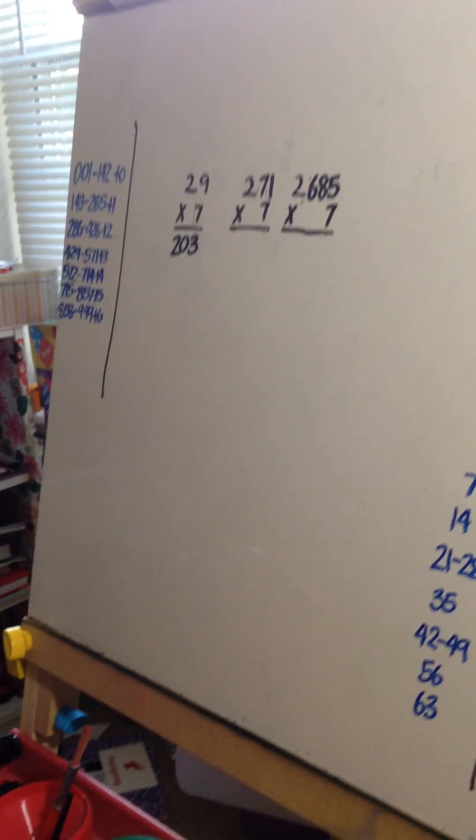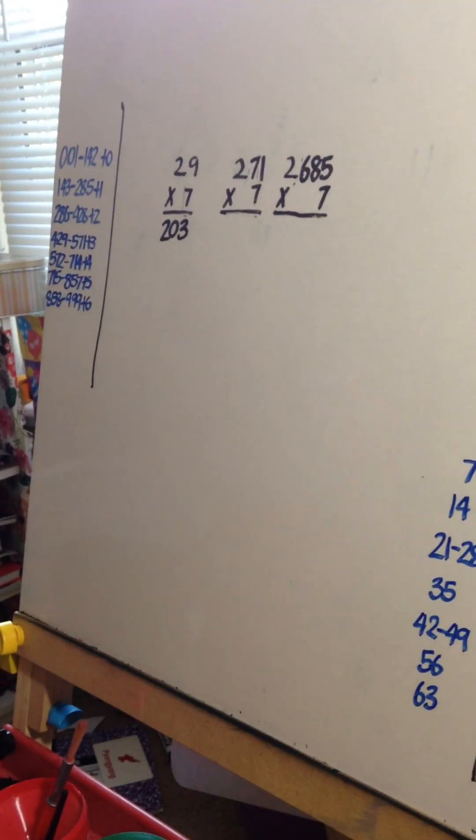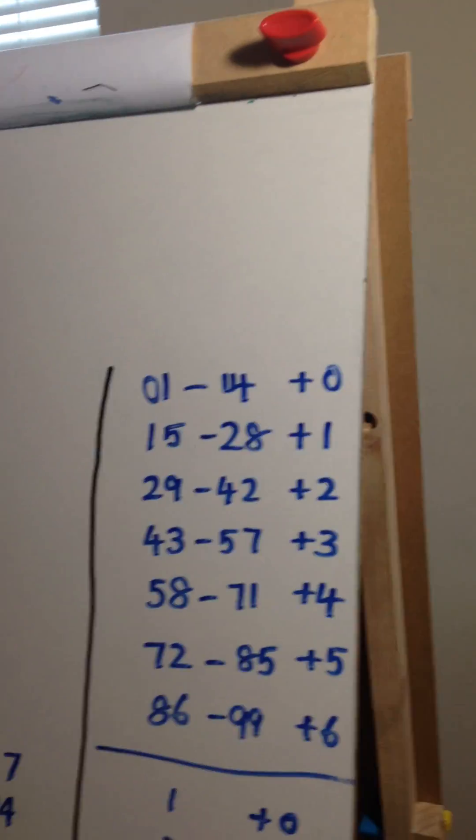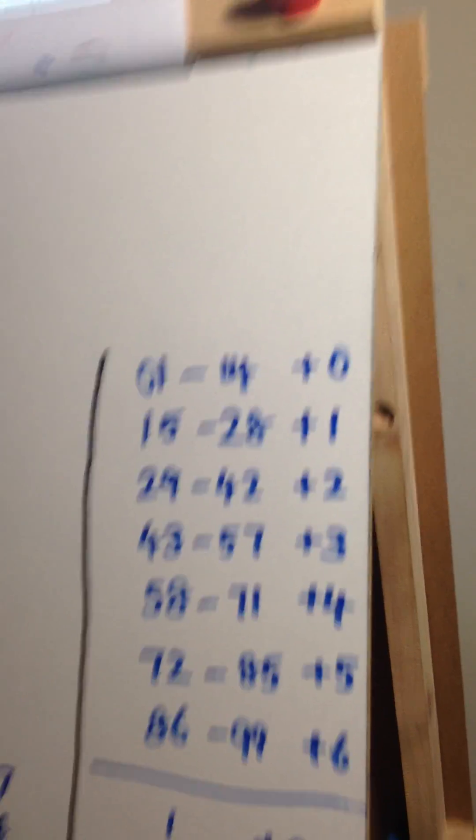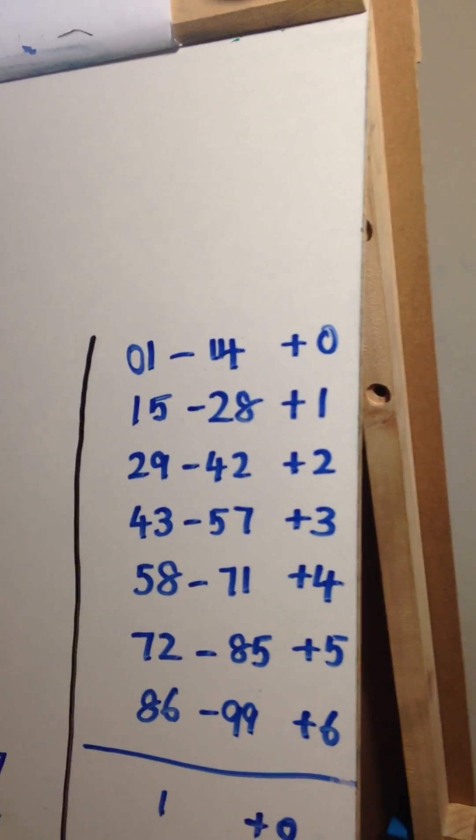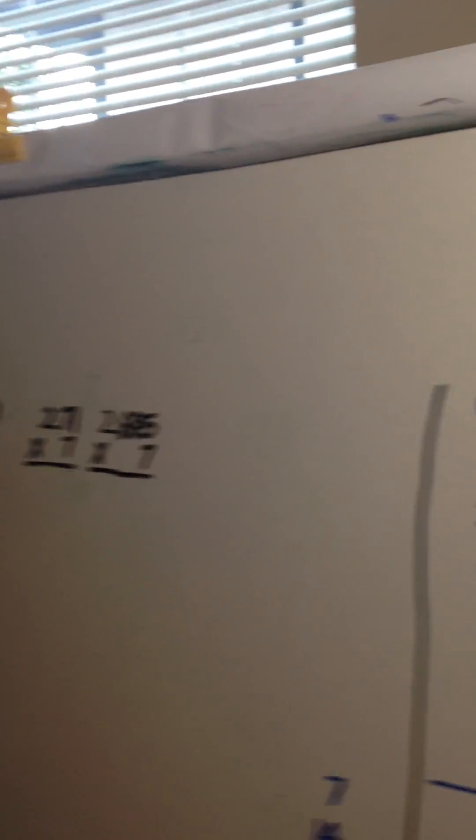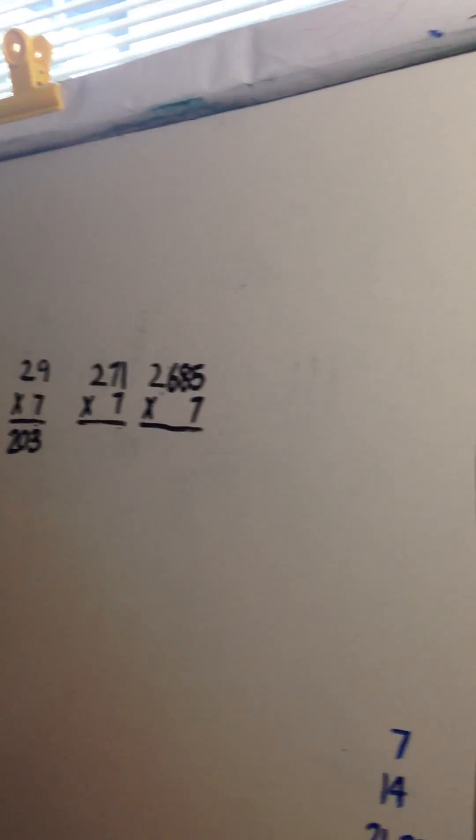271 times 7. First you do 2 times 7, and you know that already, 14. So don't write that yet. Now we're going to the two-digit formula. According to the two-digit formula, 71 fits plus 4. So you add plus 4 to 14: 18.